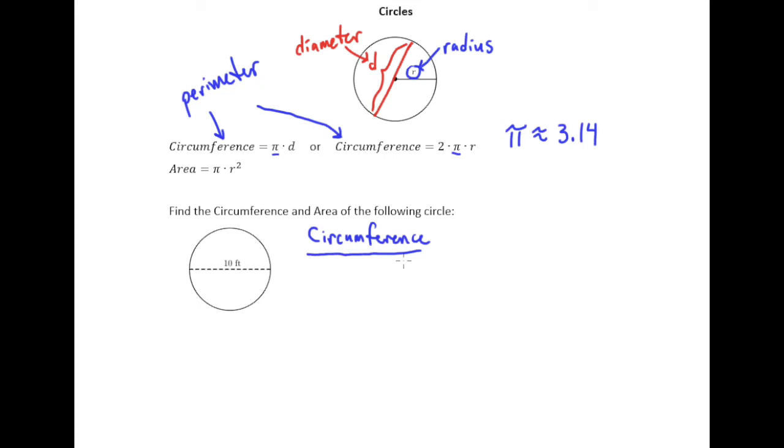All right so the circumference I have two formulas to pick from. I could use circumference equals pi times diameter or I could use circumference equals two times pi times the radius. Well the way we decide which one to use is what does this number represent? Well that number represents the diameter. So since that number is the diameter I'm going to use this formula here.